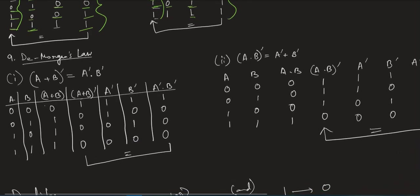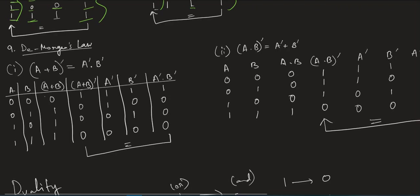Now De Morgan's law — the most important law in this chapter. De Morgan's law states that (A plus B) whole complement equals A complement into B complement. With two inputs we have four combinations. Under B: 0, 1, 0, 1; under A: 0, 0, 1, 1. Computing A plus B: 0+0=0, 0+1=1, 1+0=1, 1+1=1. Complementing these values: 0 becomes 1, 1 becomes 0, 1 becomes 0, 1 becomes 0.